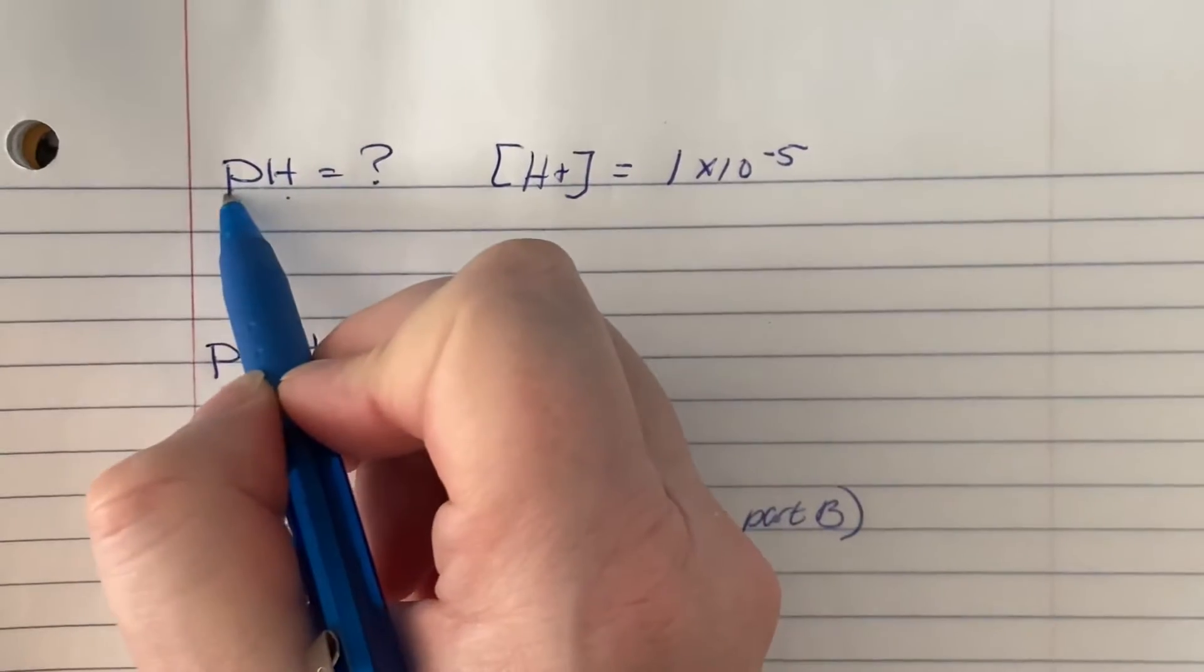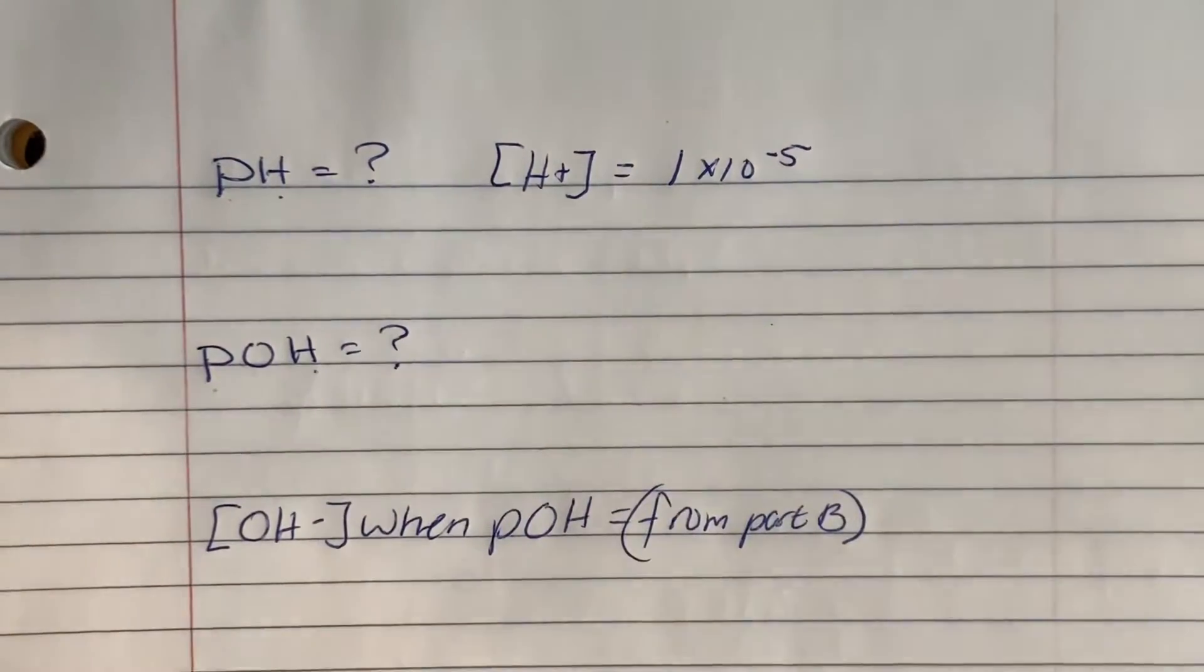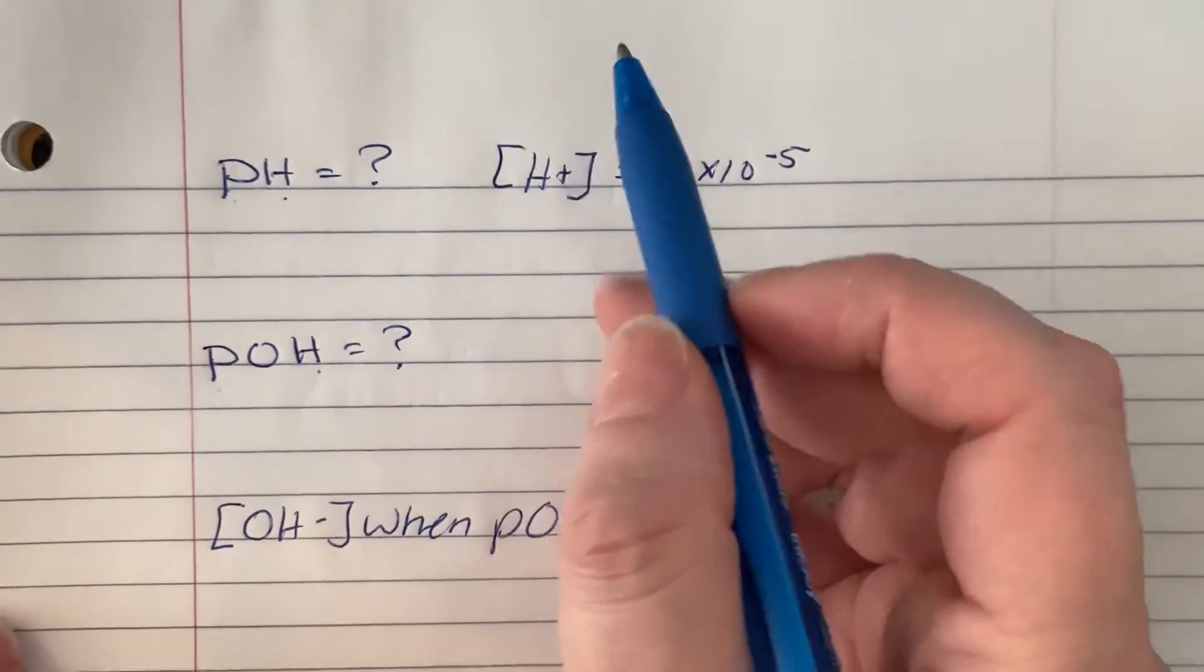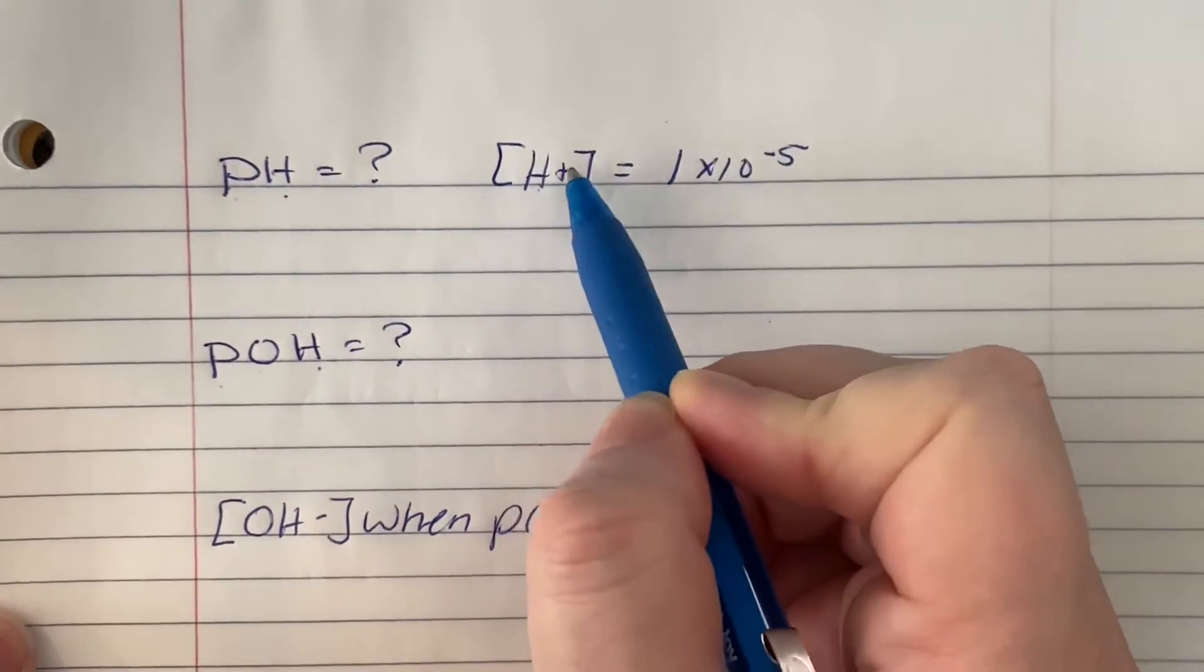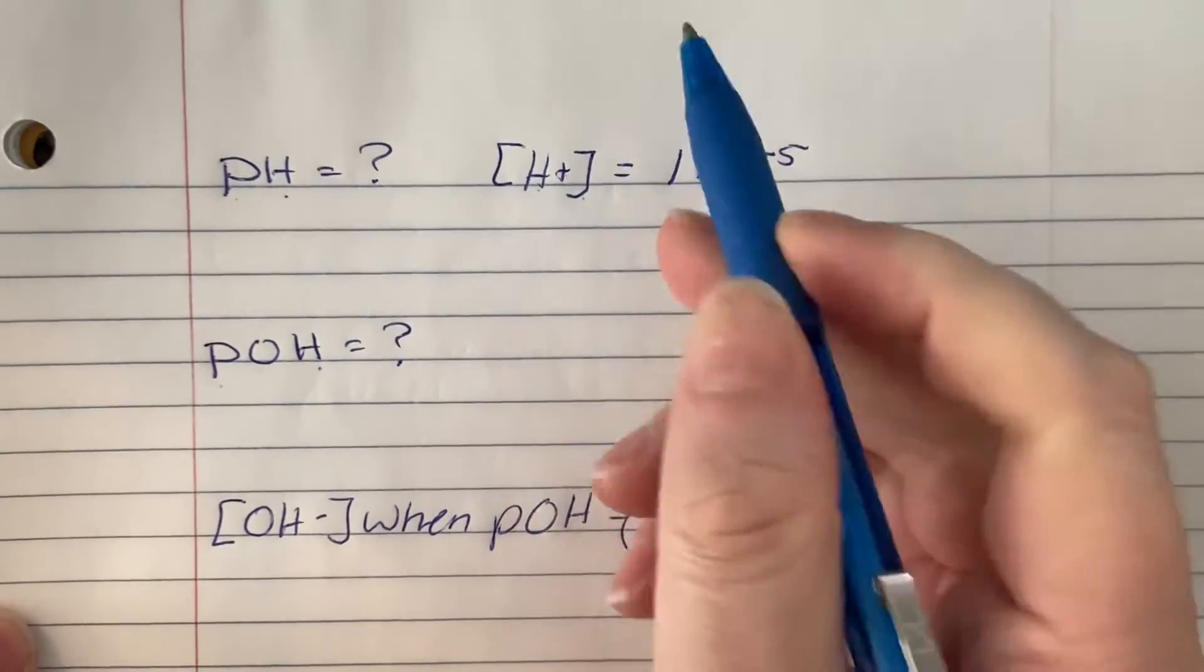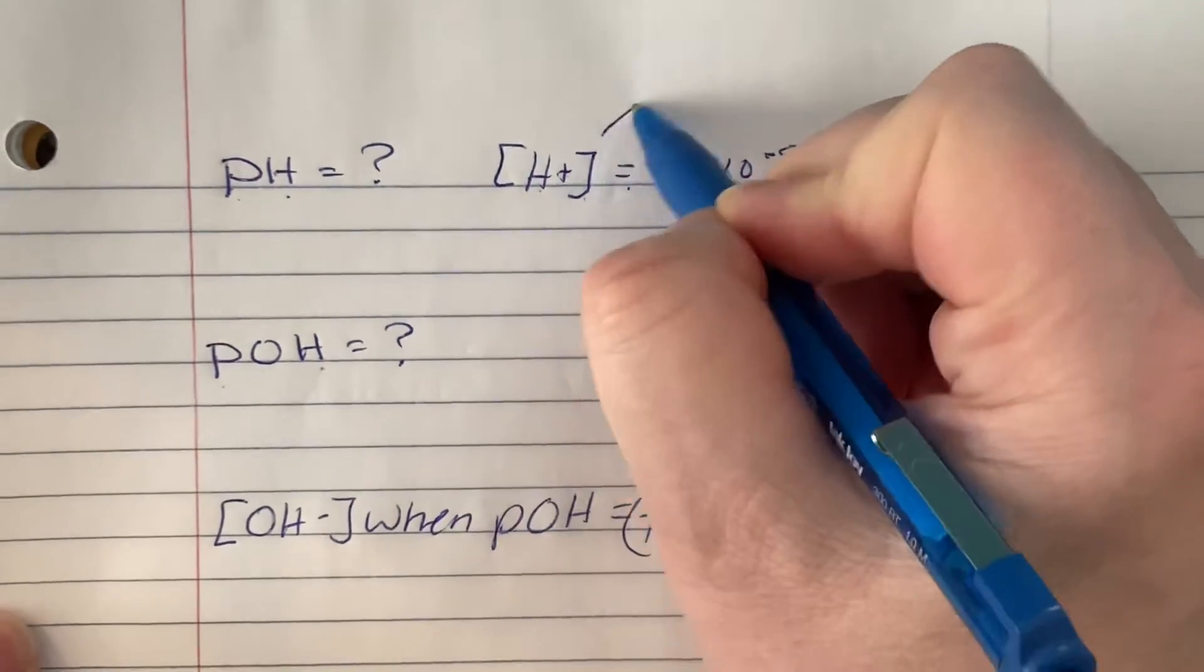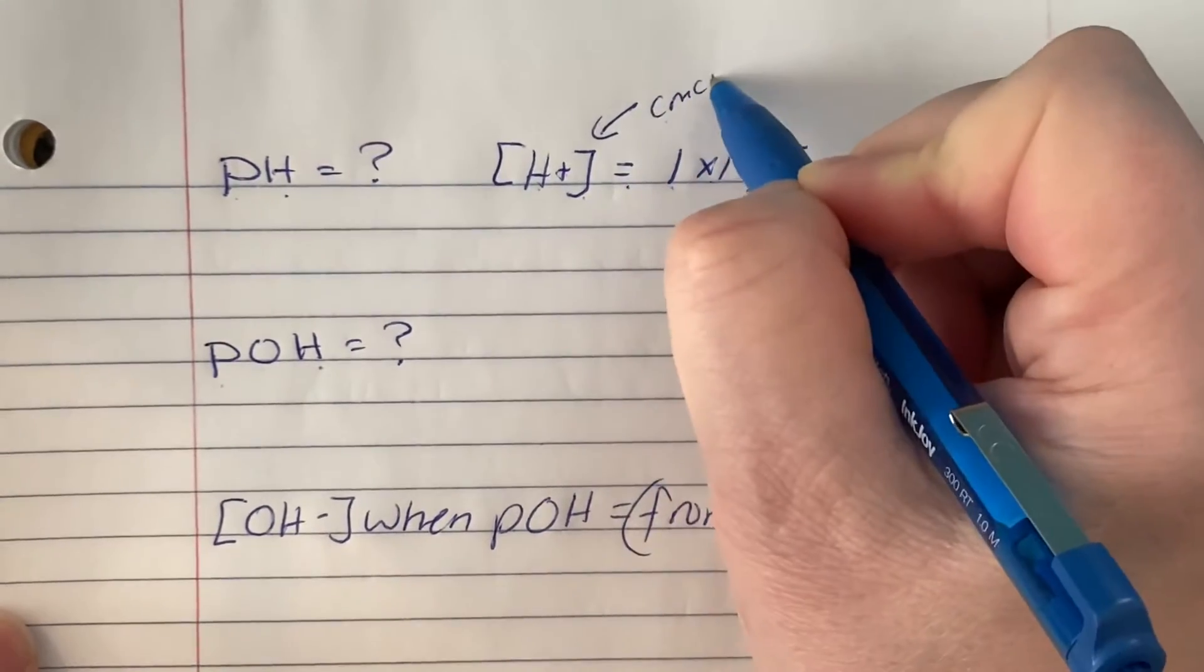The lowercase p just means that we're going to be using a log scale, so we need to know how to use your calculator. Now the question is going to tell you something like the hydronium ion concentration is 1 times 10 to the negative 5. Those brackets, they just mean concentration in this unit.